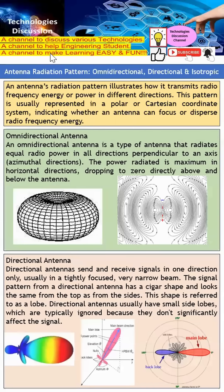In this video I'd like to describe what an antenna radiation pattern is. In short, there are actually three types: omnidirectional, directional, and isotropic. An antenna radiation pattern illustrates how an antenna actually transmits RF energy or power in different directions.